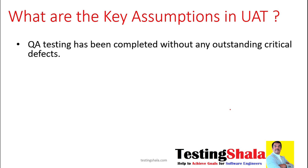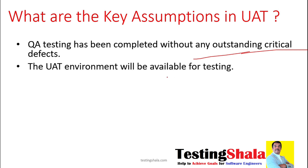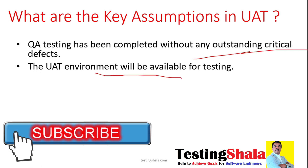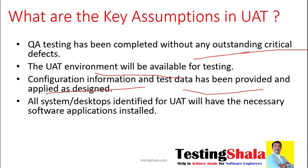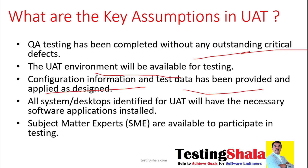What are the key assumptions in UAT? The first assumption is that software testing done by the testing team should be completed without any outstanding critical defects. The second assumption is that the UAT test environment should be made available. The third assumption is that all configuration and test data has been provided and applied into the environment, and all system and desktop requirements for UAT testers have been identified and all prerequisite software applications are installed.